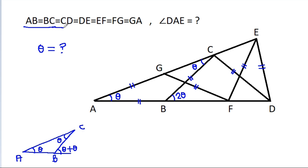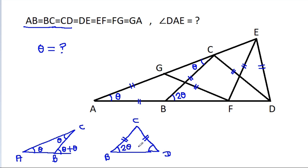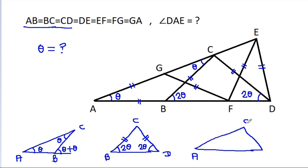Now we have BC is equal to CD. So this angle is equal to theta. And this angle is 2 theta. So this angle will be 2 theta plus theta, that will be 3 theta.